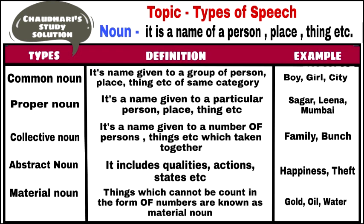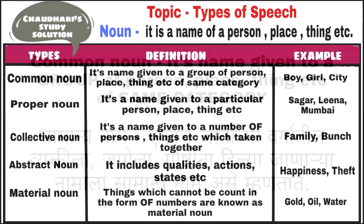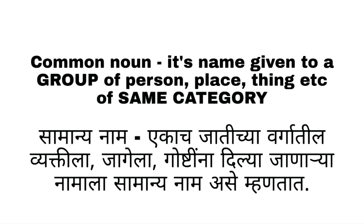The first type is common noun. The definition is: a common noun is a name given to a group of person, place, thing, etc., of the same category. Here, 'same category' and 'group' are important keywords.